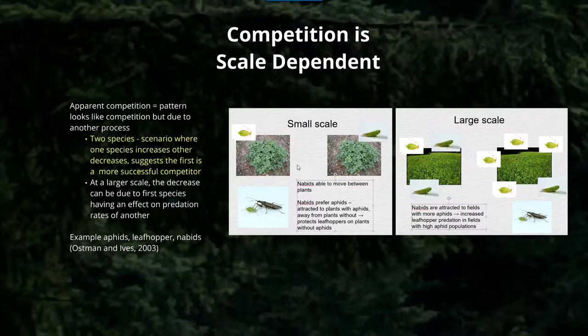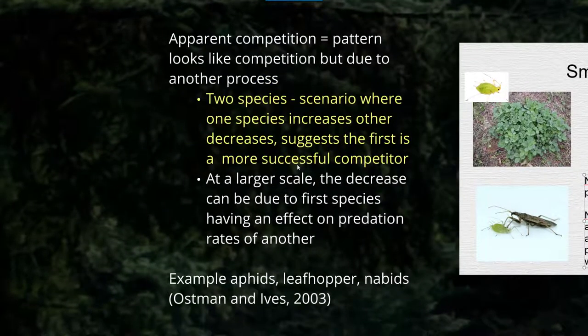Competition can also be scale dependent. There's something called apparent competition, where there's a pattern that looks like competition but is due to another process. In a scenario where there are two species, you might have one species that increases over time and another that decreases, which would suggest upon initial look that the first is a more successful competitor. However, if you back up and look at a larger scale, the decrease can potentially be due to some other artifact, such as the first species having an effect on predation rates of another. This is demonstrated in an example of aphids, leafhoppers, and nabids by Ostman and Ives in 2003.